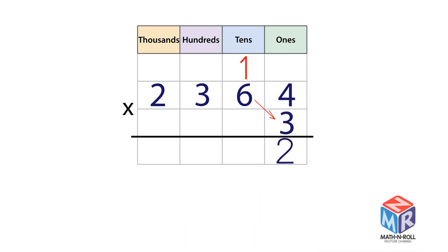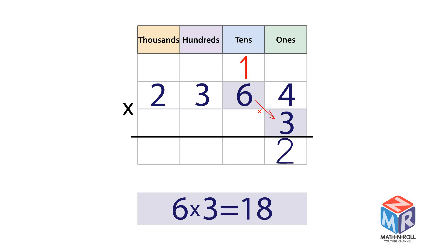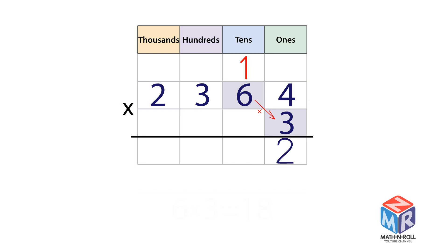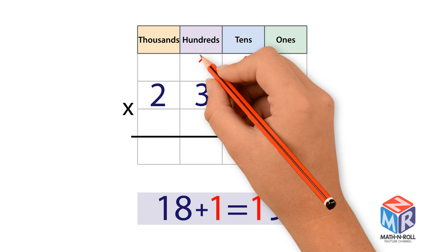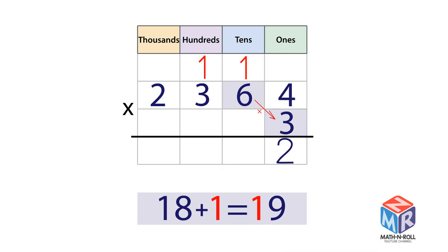Multiply the 10s. 6 × 3 tens equals 18 tens. Add the regrouped tens: 18 tens plus 1 ten equals 19 tens. Regroup 19 tens as 1 hundred and 9 tens.